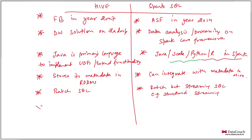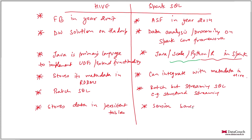Hive stores data in persistent tables. With Spark SQL, you can have session-based tables, or if you integrate with Hive, you can achieve persistent tables as well.